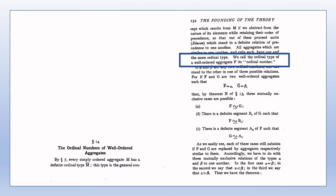Bearing in mind that ordinal numbers are a special kind of ordinal type, it follows that many of the results from Section 8 on addition and multiplication of ordinal types will be immediately or almost immediately applicable to ordinal numbers. It's worth, therefore, being familiar with the results from Section 8 because they're not necessarily repeated in this section.